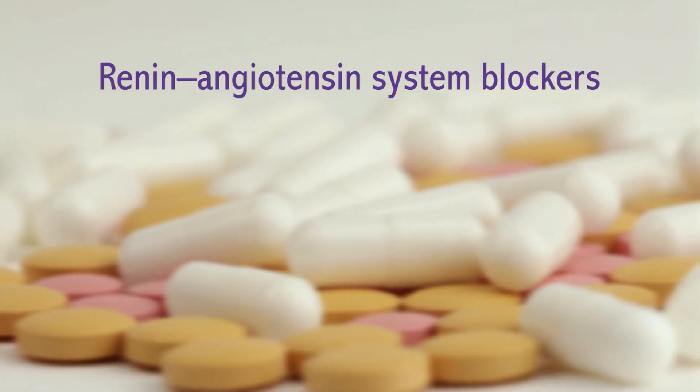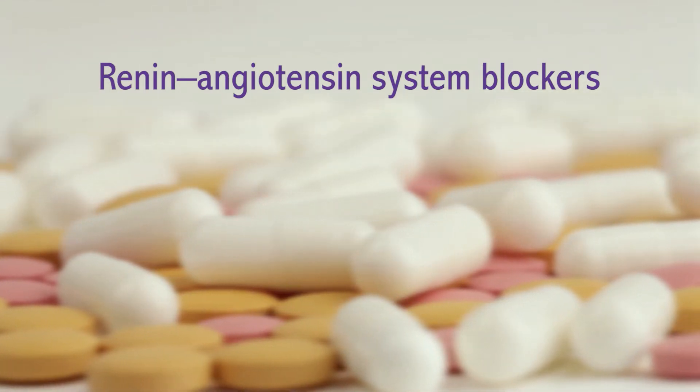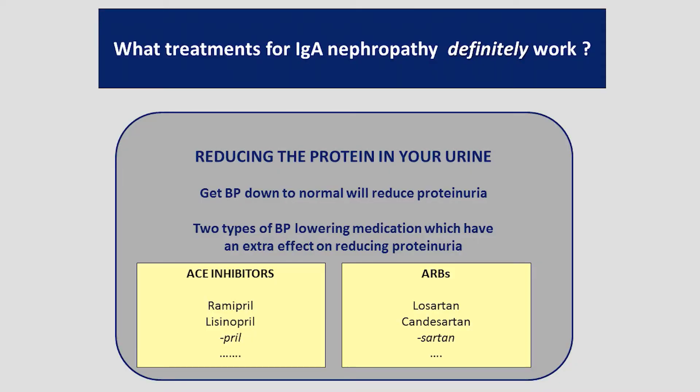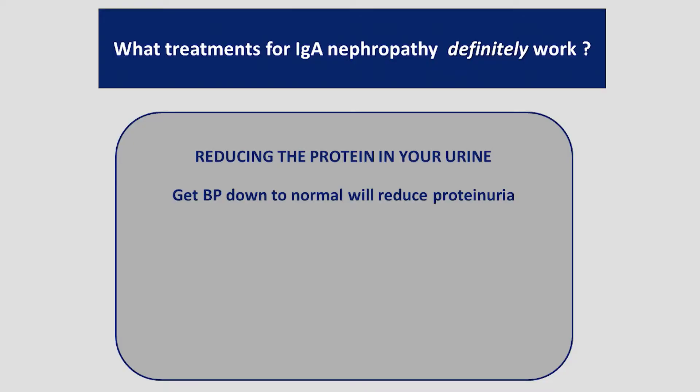In terms of the tablets that we prescribe, perhaps the most important blood pressure tablets we use in IgA nephropathy are called renin angiotensin system blockers, and these come in two different types: ACE inhibitors, which are drugs that end in the word 'pril' — such as ramipril, lisinopril, or perindopril — and drugs called angiotensin receptor blockers, which end in 'sartan', such as candesartan, valsartan, and losartan. We know these drugs are both good at controlling blood pressure but also very good at lowering the level of protein in the urine.